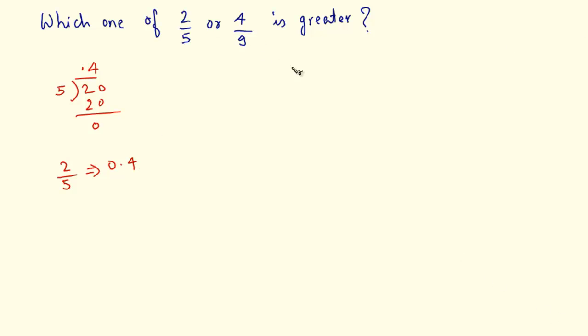Now let's solve 4 by 9. So I have to divide 4 by 9 and it cannot be divided. So I take a point. This becomes 40. 9 times 4 is 36. Again, the remainder is 4.